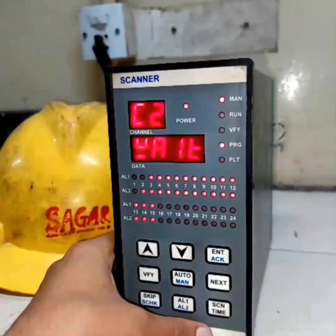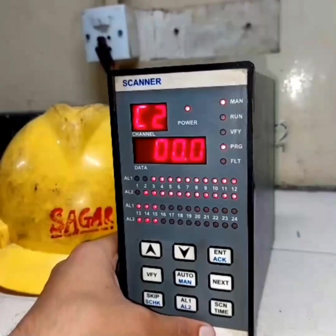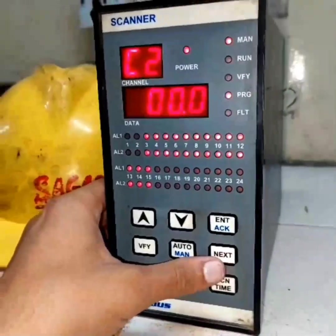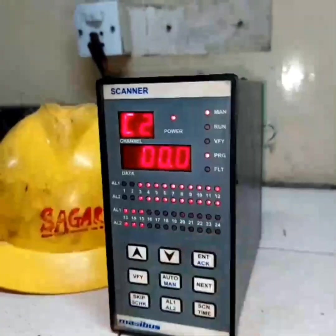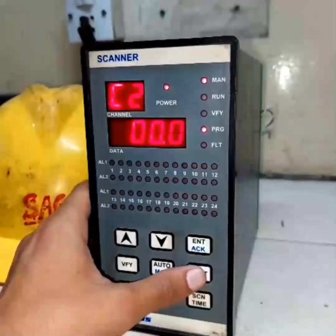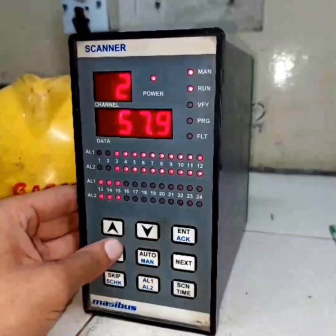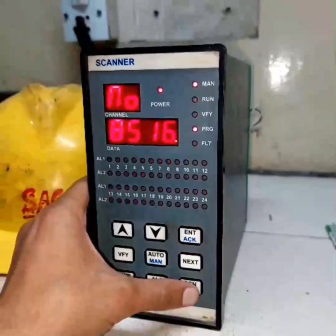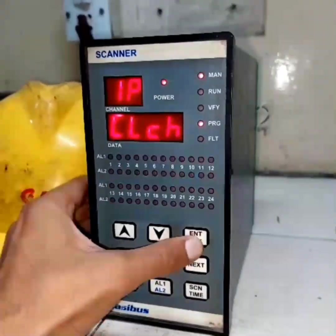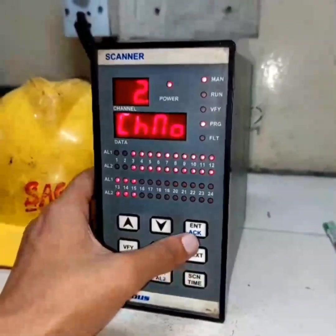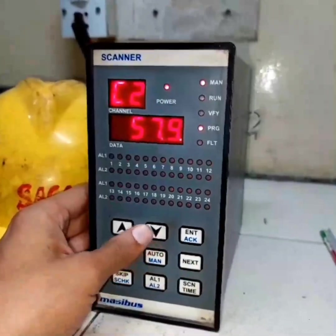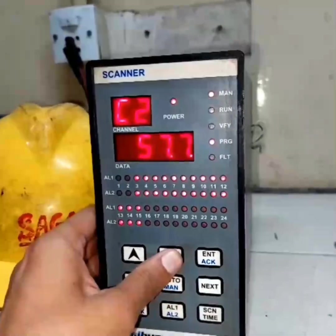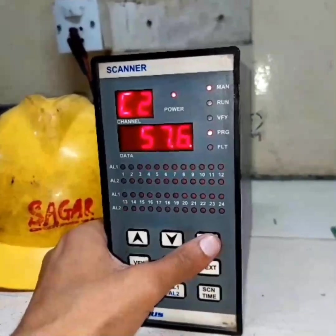Now we also have to change the calibration to full, using our calculated value of 57.6. For that, I have connected a resistor at channel two with a value of 122 ohm. I will go back and then again CNFG, press enter, scan time, IPCL, press enter, and then next. Then I will select channel two, press enter, select next. The calculated value was 57.6. I will input that value here and then press ENT again.